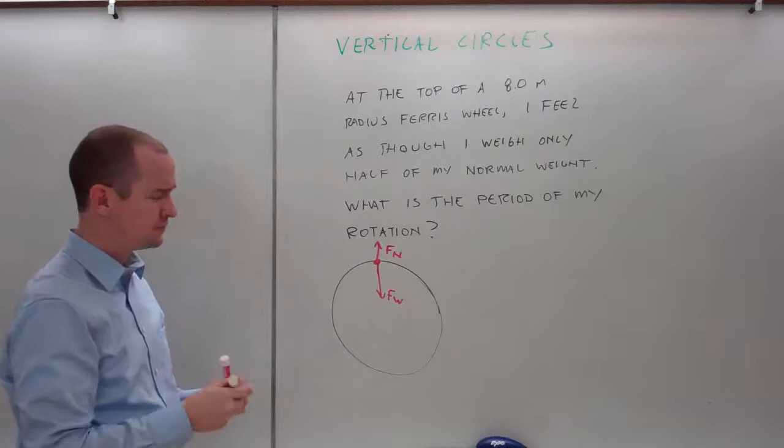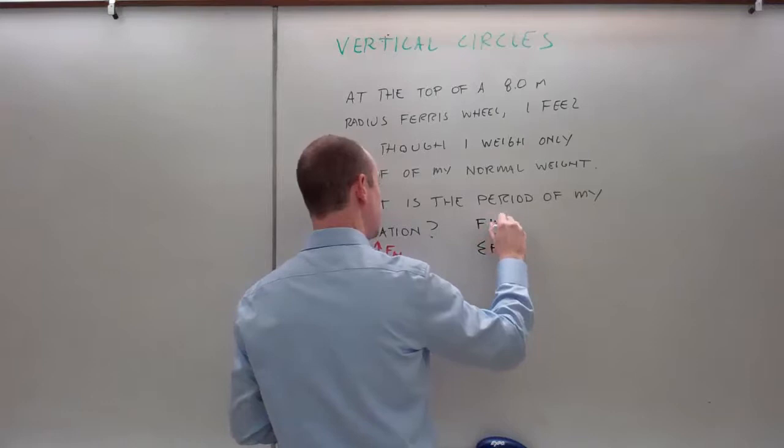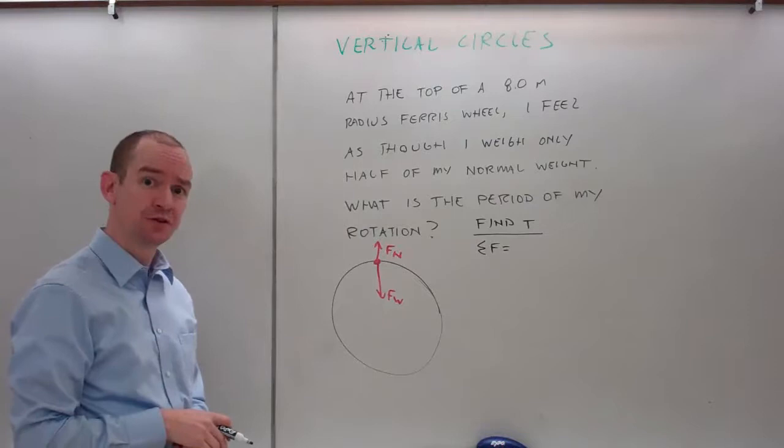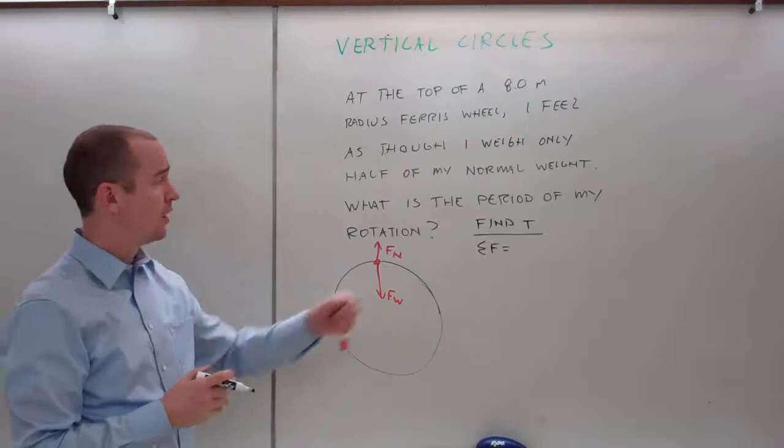Okay, let's see what that looks like. Well, I need to find a period. Period is related to time. Time is related to circular motion by velocity. So I'm going to have to find my velocity first, and then I'll be able to find my period.